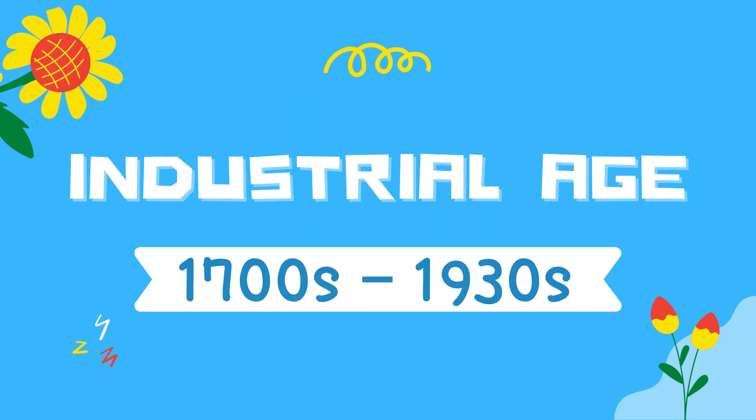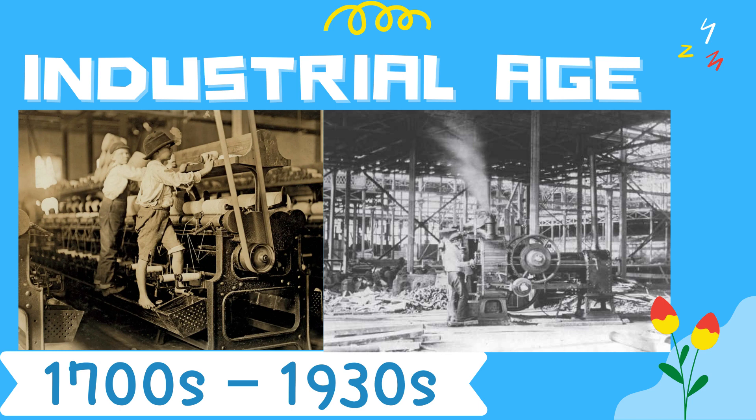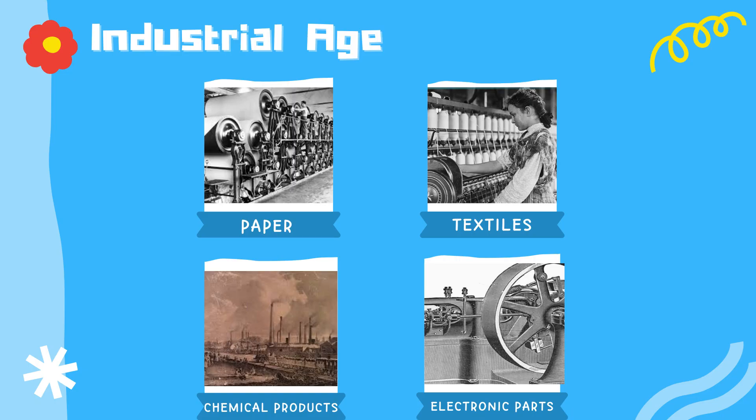After some time, we transitioned into the Industrial Age during the 1700s until the 1930s. Nung panahon ito, people used the power of steam and fuel to develop machinery and tools. Dito na umusbong yung mga factory or yung mga paggawaan, at yung mga pinoproduce nito ay merong important role sa Industrial Age. Ang mga ginagamit noon ay paper, textiles, chemical products, and electronic parts.